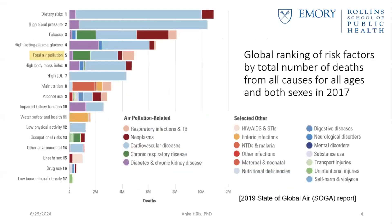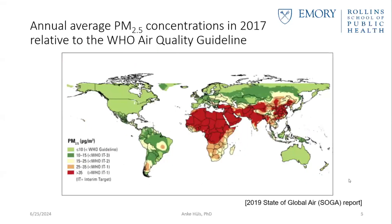In general, air pollution is the fifth leading risk factor for mortality worldwide and is responsible for more deaths than better-known risk factors such as malnutrition, alcohol use, and physical inactivity. Each year, more people die from air pollution-related diseases than from road traffic injuries or malaria. Overall, more than 90% of people worldwide live in areas exceeding the WHO guidelines for healthy air.